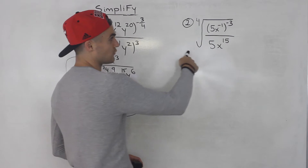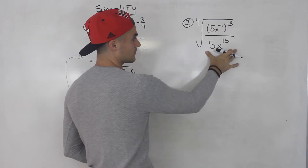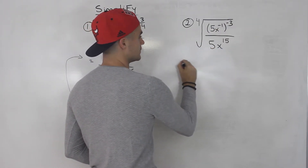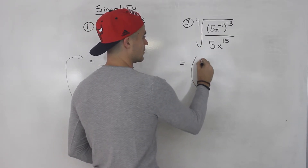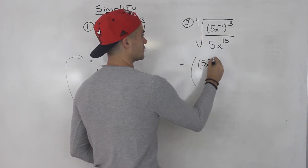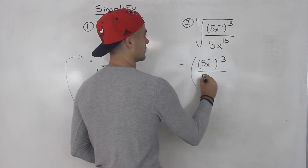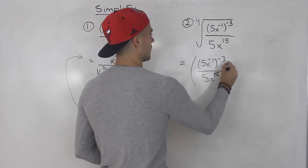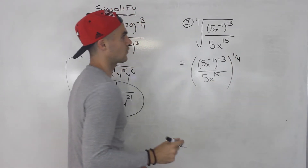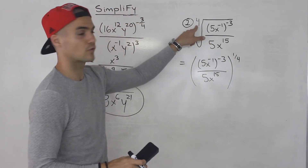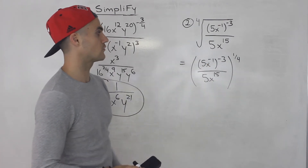Moving on to number 2, we have the fourth root of all of this. The first thing I'm going to do is change this fourth root to a rational exponent, so that would be to the power of 1 over 4. All of this is the fourth root, which is the same as all of this to the power of 1 over 4.